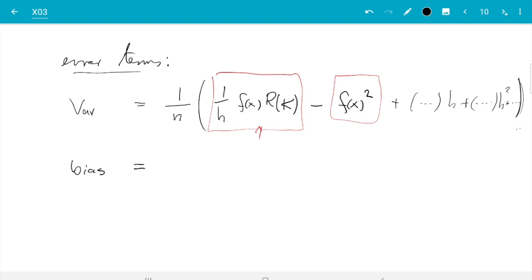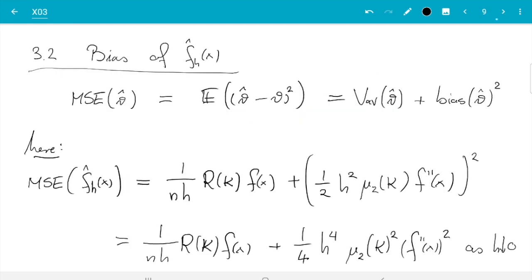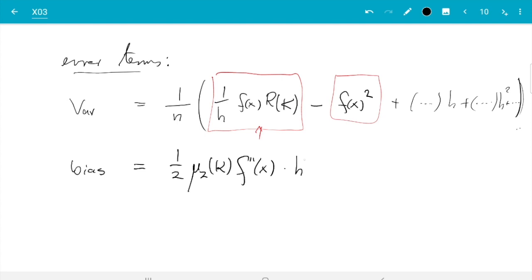Good, and then for the bias it's a bit different. First there is no n in the bias, so we get 1/2 second moment f double prime times h² plus, now we didn't do more terms but I argued the first term cancelled because the kernel is symmetric. Same logic, the third term which we didn't do will cancel, so the next term which actually will contribute is the fourth term and the even ones, so h⁶ will be the next one.